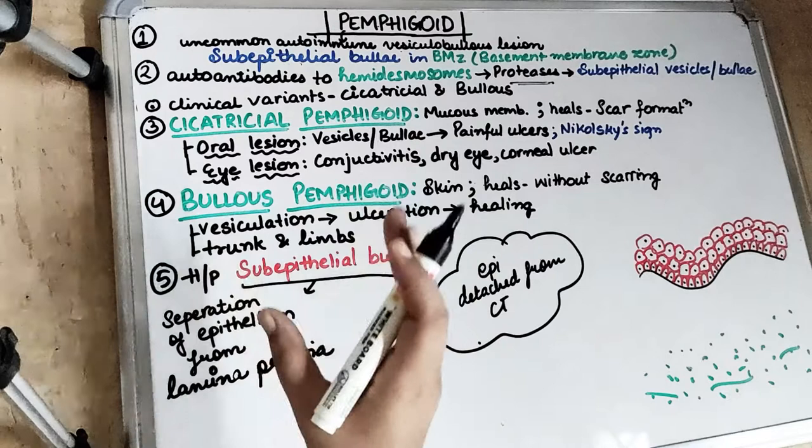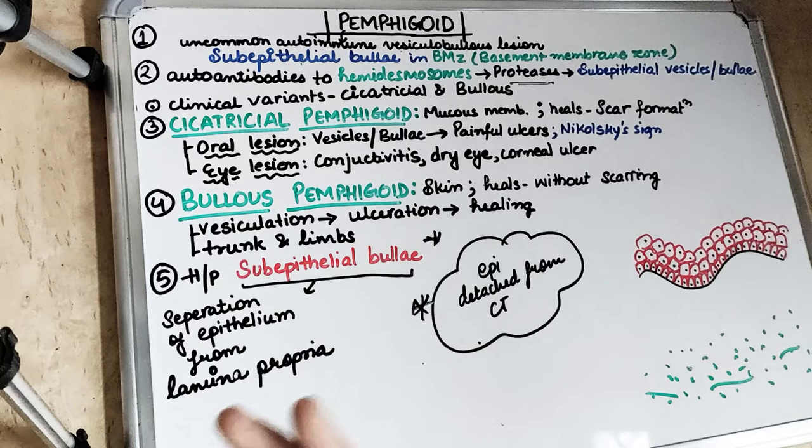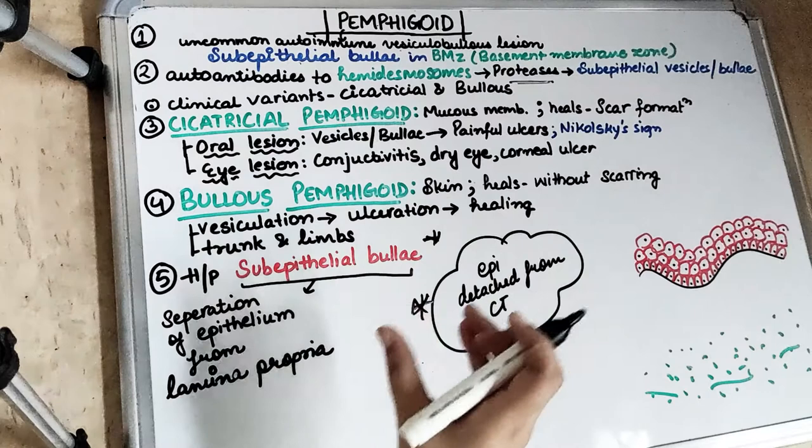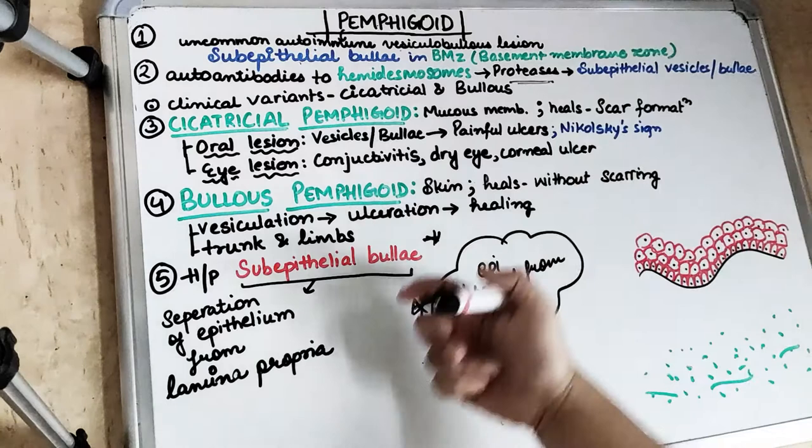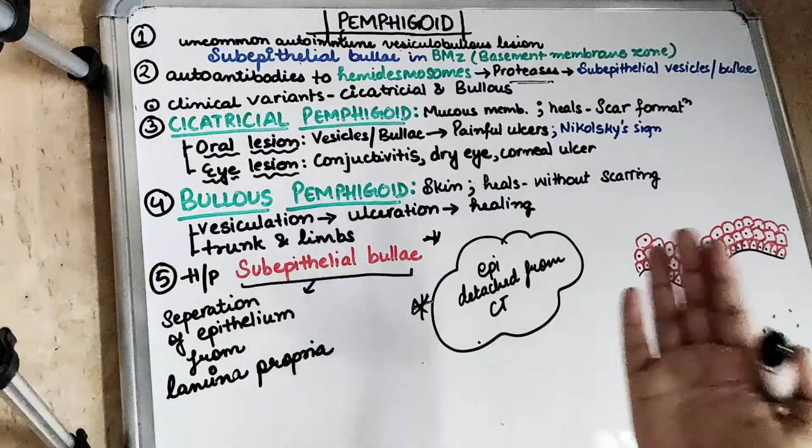There are two clinical variants of pemphigoid: cicatricial pemphigoid and bullous pemphigoid. Cicatricial pemphigoid involves the mucous membrane, while bullous pemphigoid involves the skin. So pemphigoid can cover both the skin and the mucous membrane.